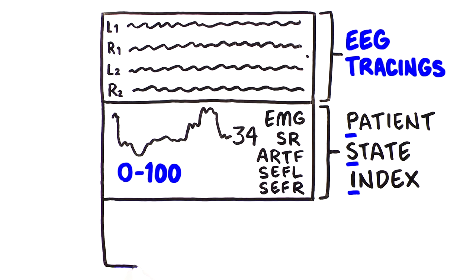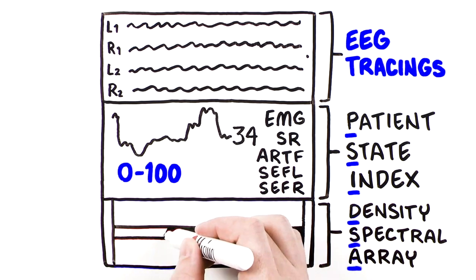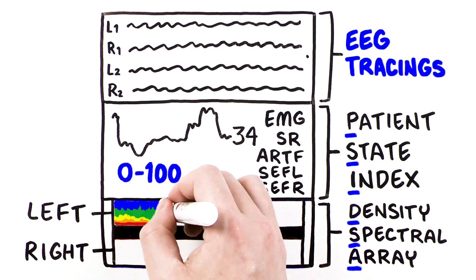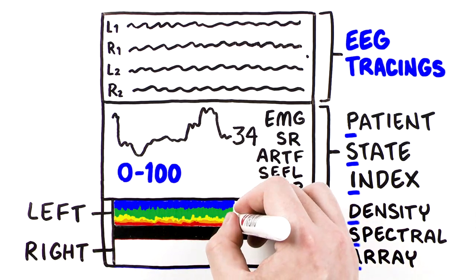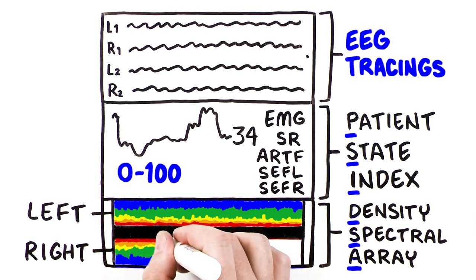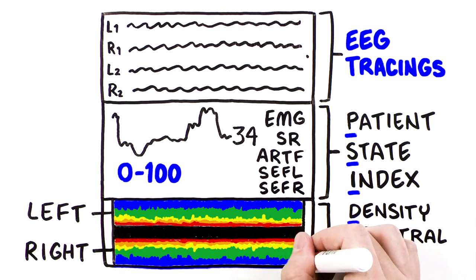Finally, the colorful graph displayed at the bottom of the root screen is the Density Spectral Array, or DSA. The DSA contains left and right spectrograms, representing the power of the EEG on both sides of the brain within specific frequency ranges. Independent of the PSI, the DSA provides another interpretation of EEG.